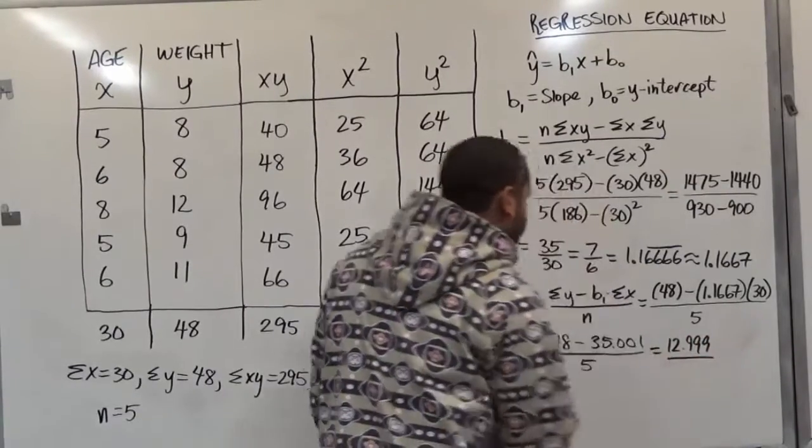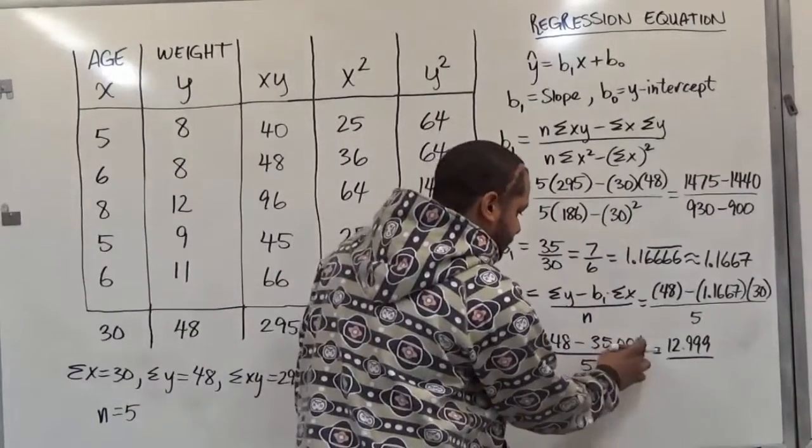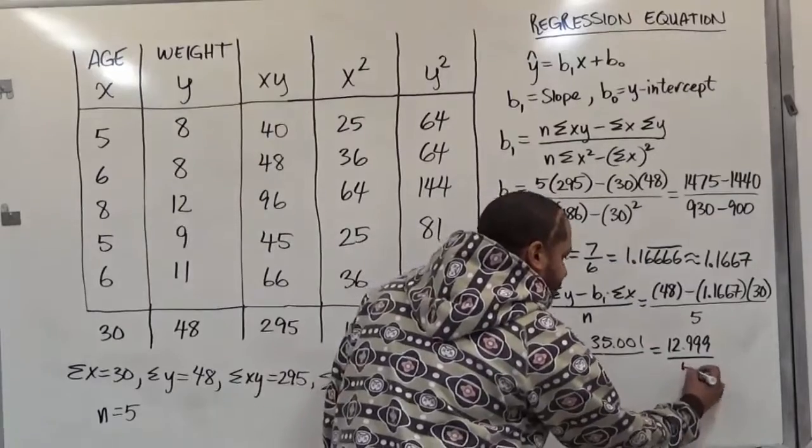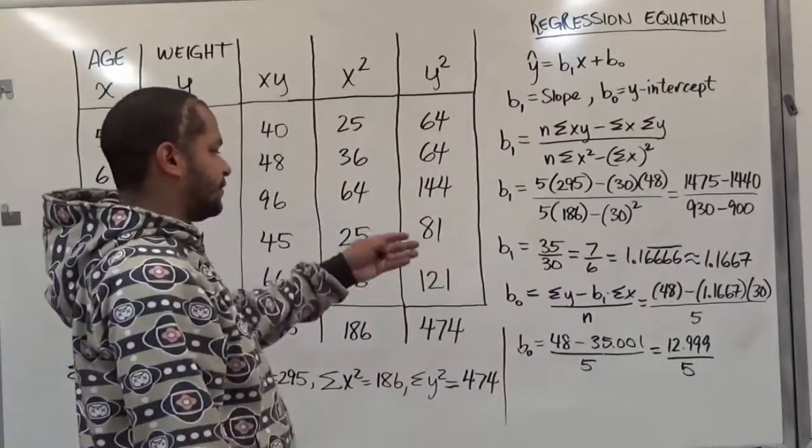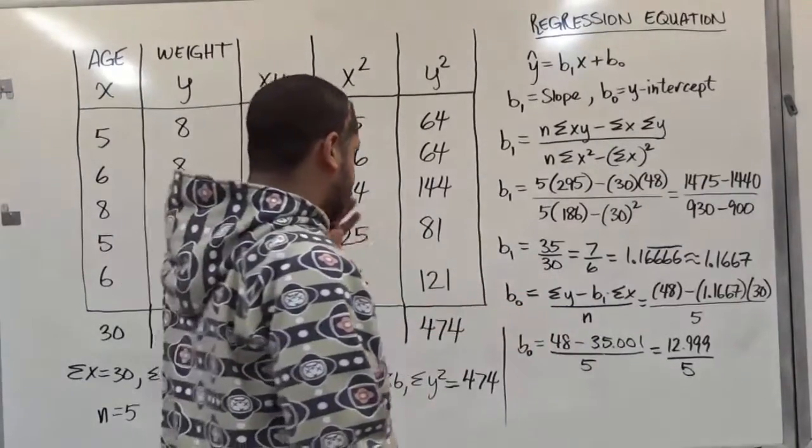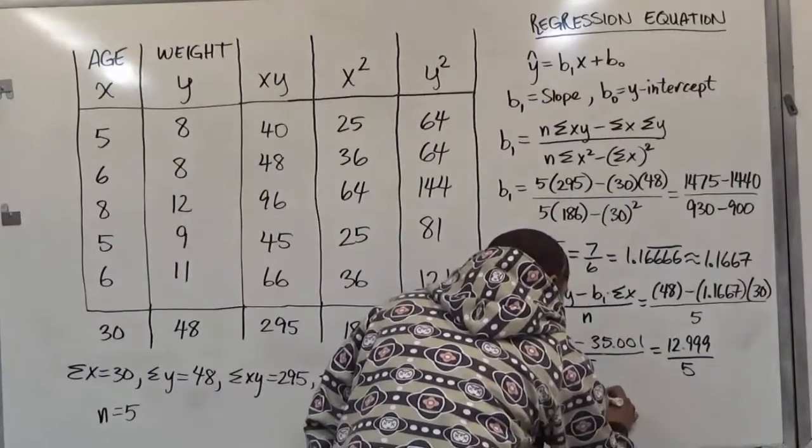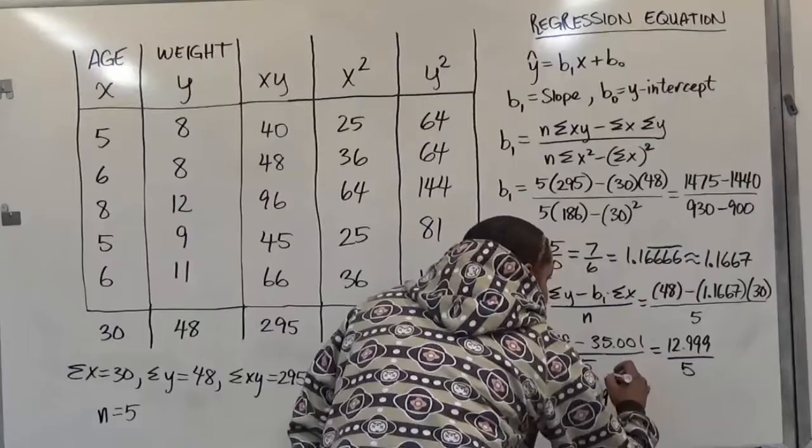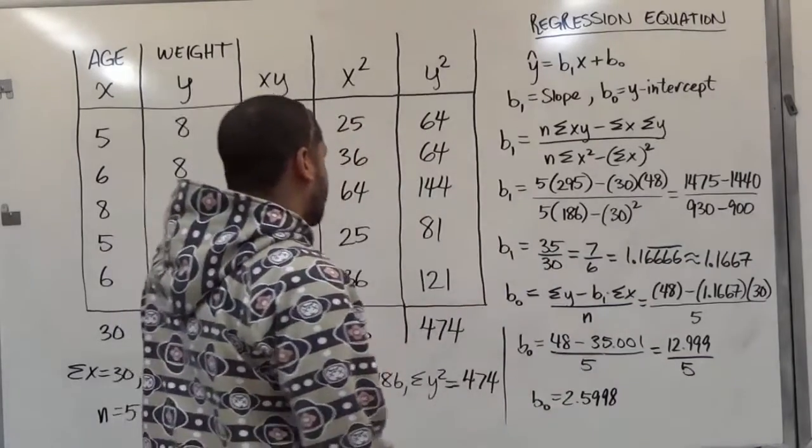This number is very close to 13. Had this not been there, the difference between 48 and 35 is just 13. But with this little decimal here, we're going to get this result. Now for the final division, once we divide 12.999 by 5, what we're going to get here is 2.5998. And then we have our y-intercept.